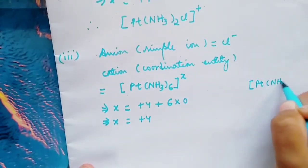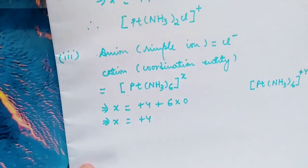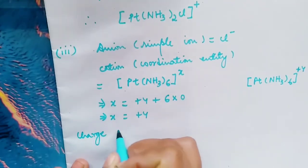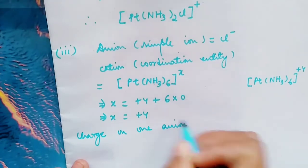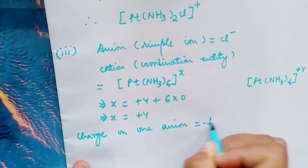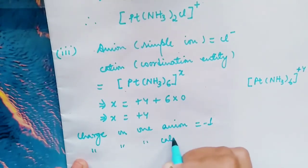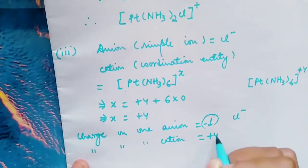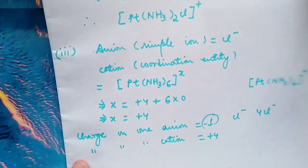Charge on one anion is how much? It is -1. Charge on one cation is +4. Cl- is -1. So in order to be balanced with this one, we need 4 Cl-.